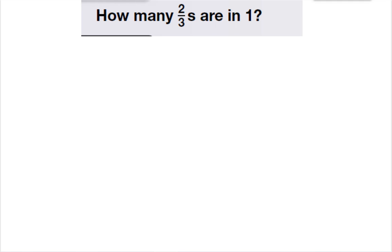So this question is asking how many 2 thirds are in 1. Whenever it's asking for how many are in 1, this is your big hint that it's looking for a reciprocal. This is basically asking how many are there or equal to 1. So it's saying 2 thirds times something equals 1 whole.